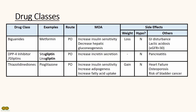Thiazolidinediones, such as pioglitazone, increase insulin sensitivity, adipogenesis, and fatty acid uptake. It causes weight gain and does not cause hypoglycemia. Side effects include heart failure, osteoporosis, and an increased risk of bladder cancer.